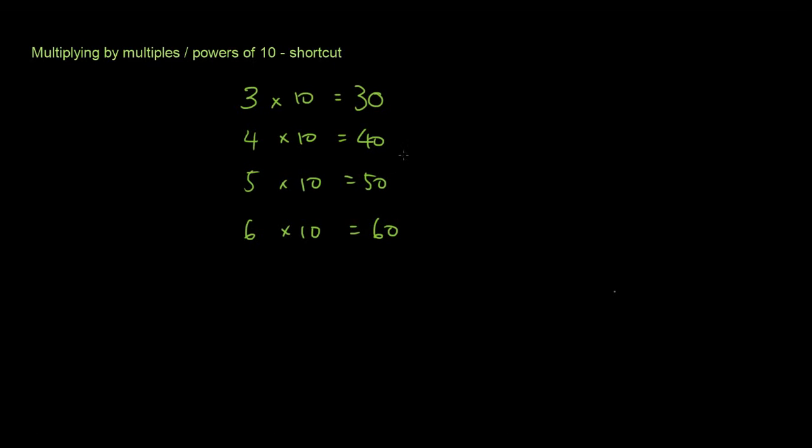Now what happens when you multiply a number by 100? So for example, 3 times 100. Well, 3 times 100 is the same as 100 times 3, which will give you 300. So 4 times 100 is 400.